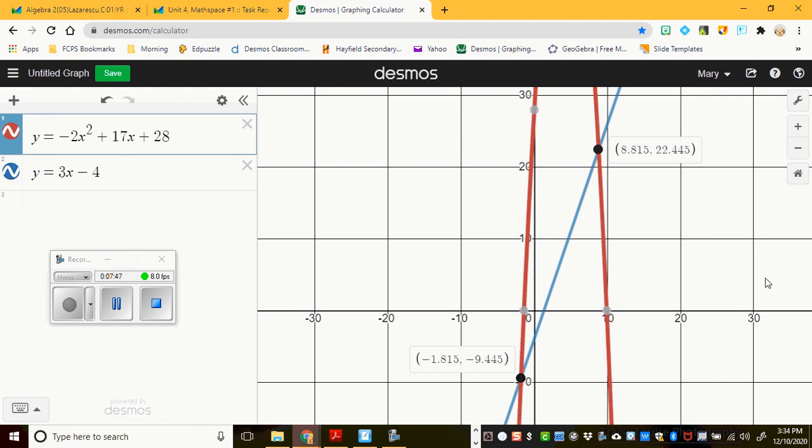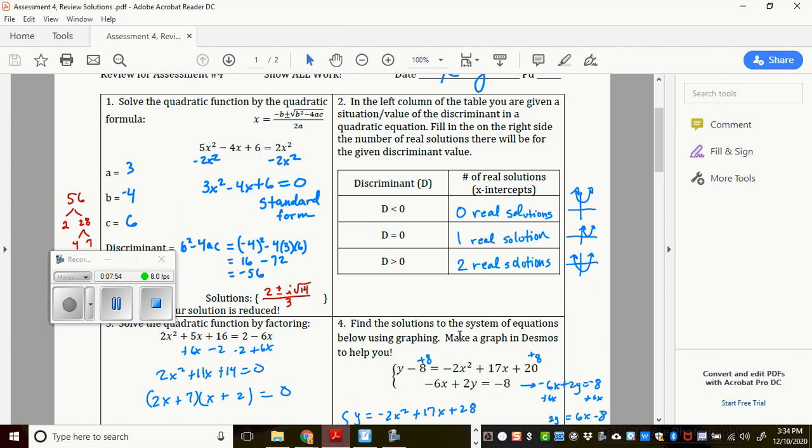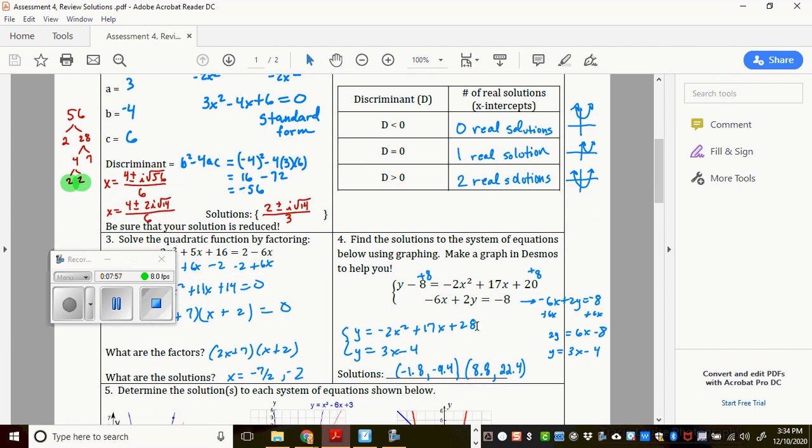So I can press this minus key, or I can scroll out, and I want to know where these things intersect. I don't care about this touching the x-axis here. I care about where they intersect. This intersects when x is negative 1.815 and y is negative 9.445. And the other one is 8.815 and 22.445. Alright. So those are going to be your solutions. I feel like those might be a little bit... Nope. There they are. Okay. So that's correct. So there's your solutions that you would write in.